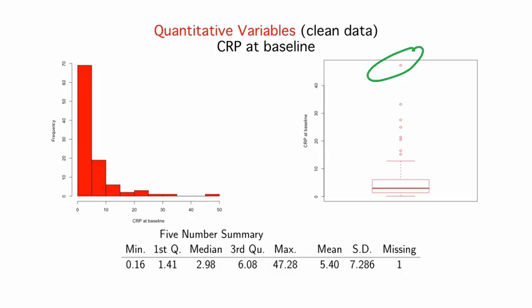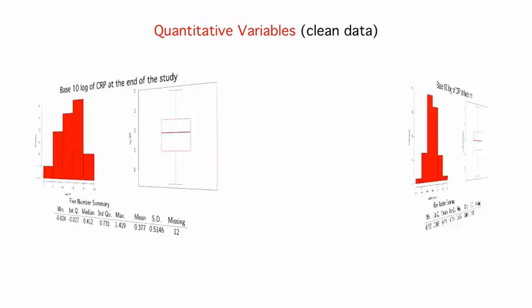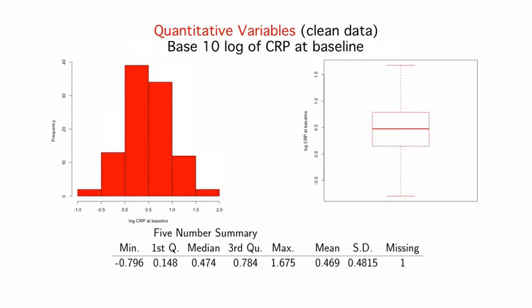In the regression lectures, we saw how a logarithm transformation can be useful in creating a linear relationship. Because of the shape of the logarithm function, logarithmic transformations bring in long right tails, so they're also useful in situations such as this one. Again, we'll use the base 10 logarithm. And here are the plots and summary statistics of CRP at the end of the study once the base 10 logarithm has been taken. You'll note that it's much more symmetric, and as a result, we should be much more confident using inferential procedures based on the normal distribution. This is also the case for CRP at baseline. The logarithmic transformation changes what was a very right skewed distribution to one that is symmetric and bell-shaped.